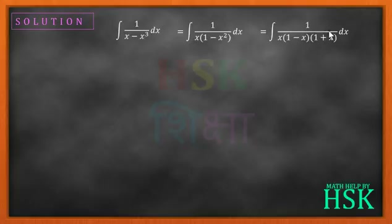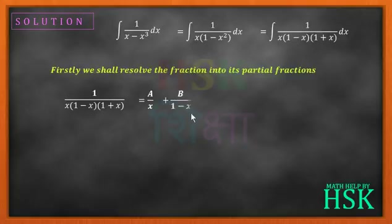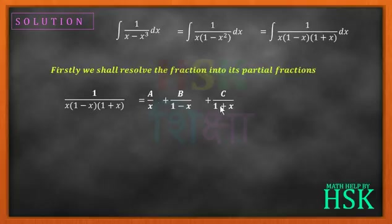So this integral is equal to 1 upon x into 1 minus x into 1 plus x dx. Next, we have to convert this fraction into its partial fraction. I'm going to write it as A upon x plus B upon 1 minus x plus C upon 1 plus x.